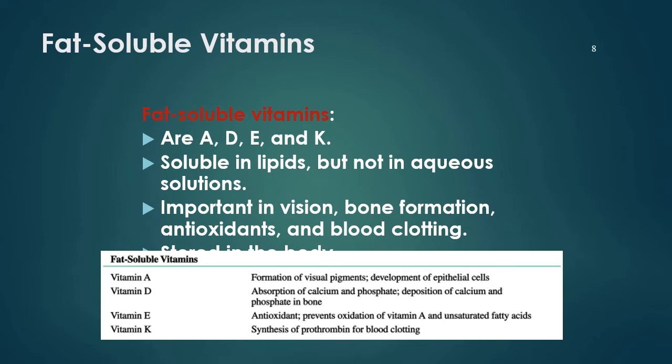Vitamin A can assist in the formation of visual pigments. As many of us have heard since childhood, carrots are good for your eyesight because carrots contain a lot of beta-carotene, which is also a form of vitamin A, and it is very good for the development of epithelial cells.